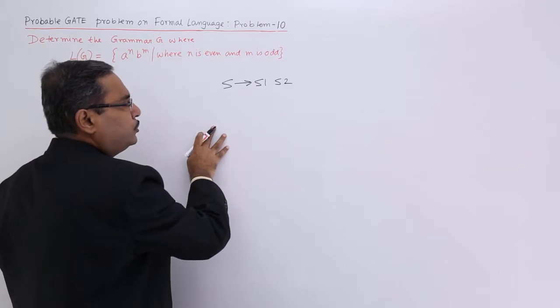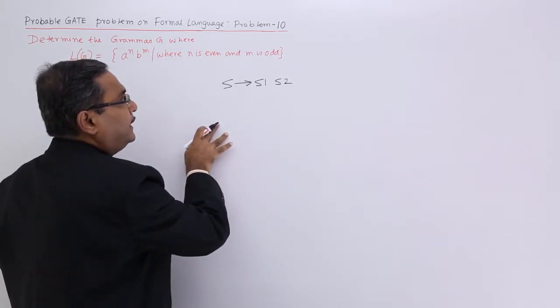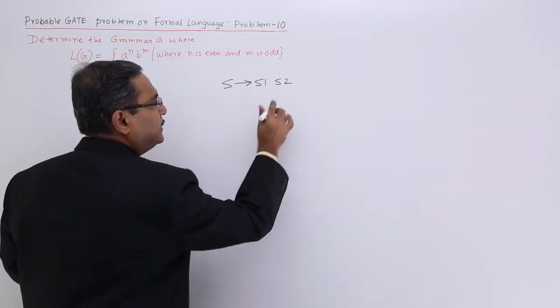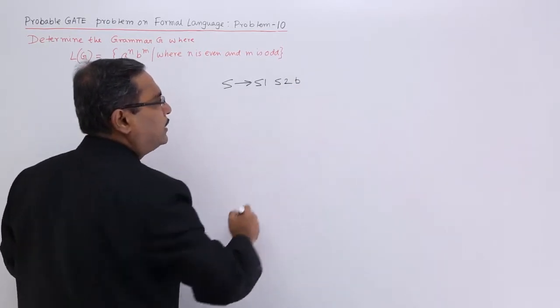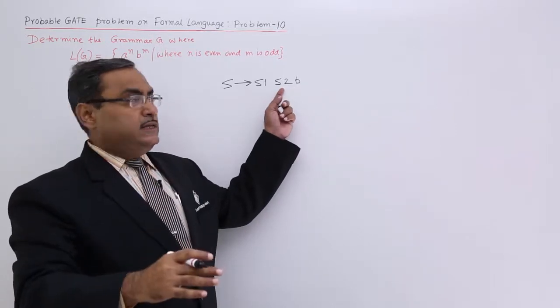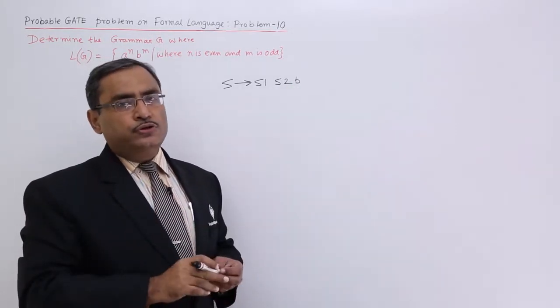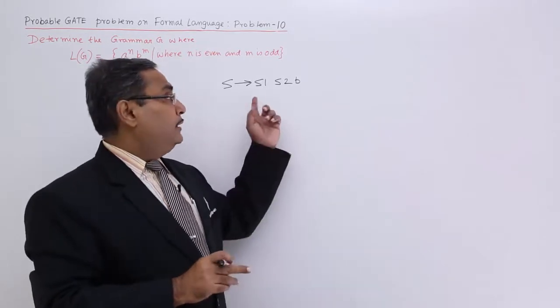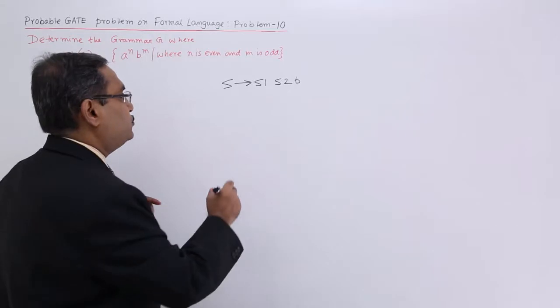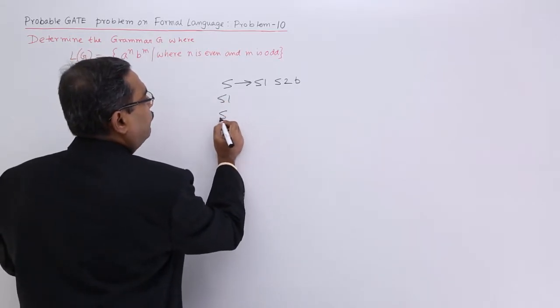S1 will produce even number of a's. S2 will produce even number of b's. But if I put 1 b here extra, then if S2 produces even number of b's, 1 b will be extra. So S2 will produce odd number of b's. I can write this particular production rule in this way. Let me go for S1 and let me go for S2.